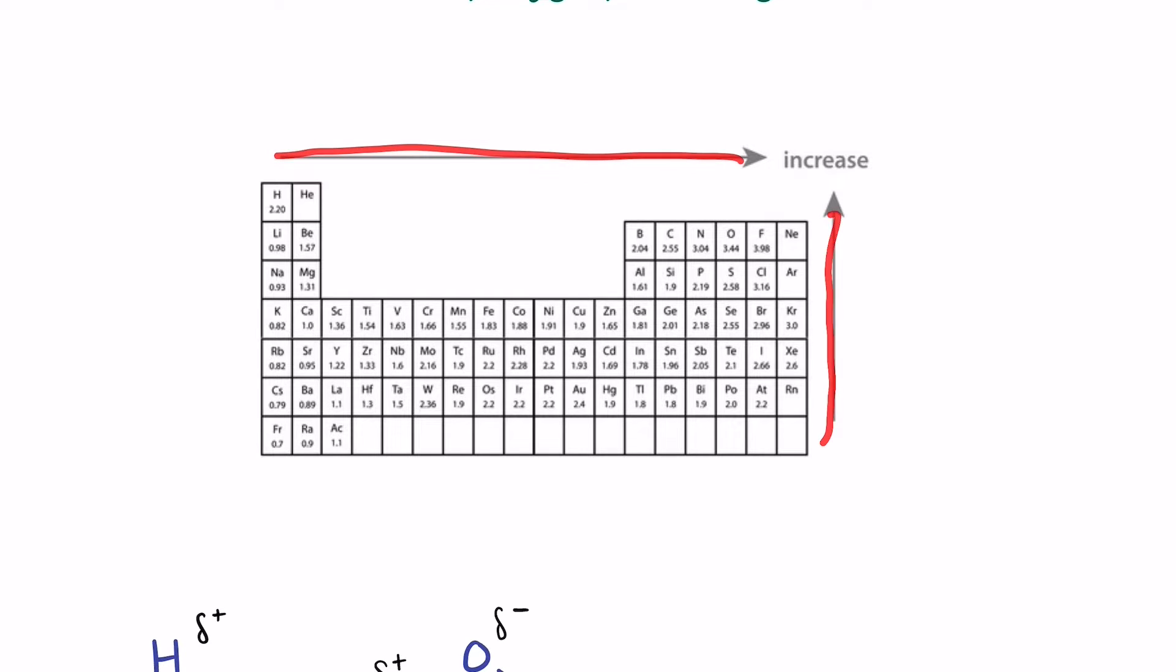So electronegativity increases as we get to this corner of the periodic table. But having a high electronegativity number simply means that it wants electrons. And like I said, right here are going to be the atoms that we are focusing on: nitrogen, oxygen, and fluorine.